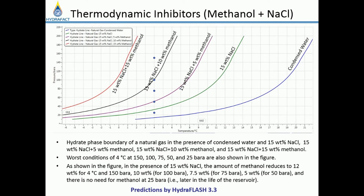Later in the life of the reservoir, the water cut normally increases. This increases the pump rate for methanol to maintain the desired methanol concentration, and hence the inhibitor cost increases. Furthermore, the produced water may contain formation water, which normally has salt in it, increasing the salinity of produced water. Salt can also be regarded as a hydrate inhibitor, although it is not normally added for hydrate prevention.